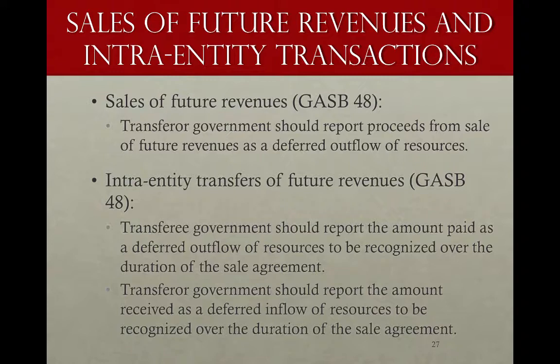If it's an intra-entity transfer of future revenues — meaning something within the financial reporting entity, such as between the primary government and one of its component units — then the transferee government, the one receiving the transfer of future revenues, should report the amount paid as a deferred outflow of resources, recognized as outflows over the duration of the sale agreement. The transferor government — the one providing the future revenues to the other entity — will report the amount received as a deferred inflow of resources and recognize revenue over the duration of the sale agreement.